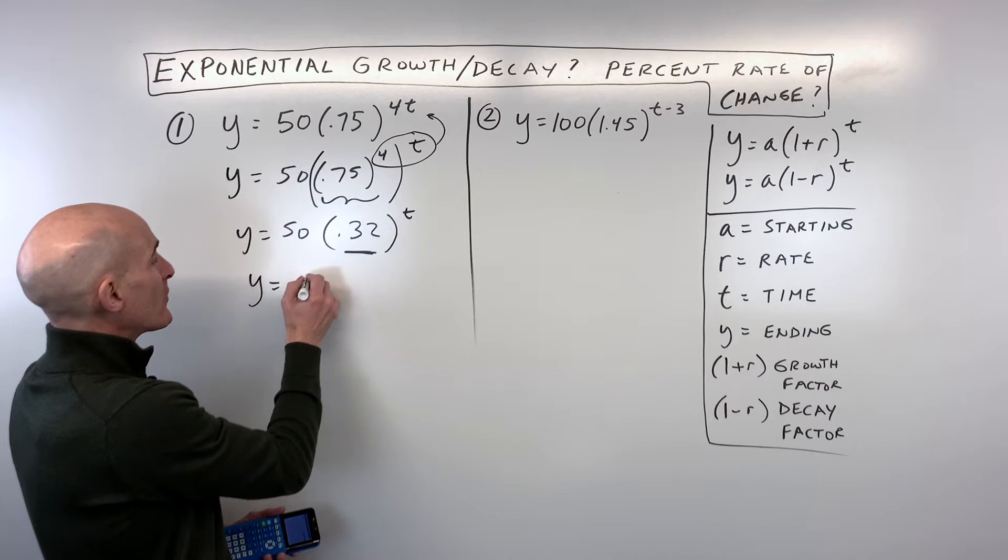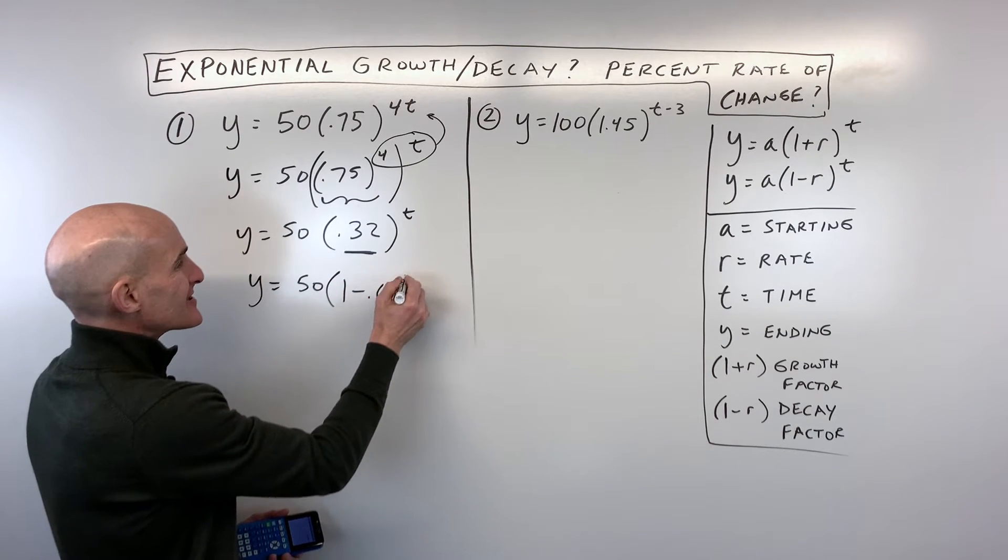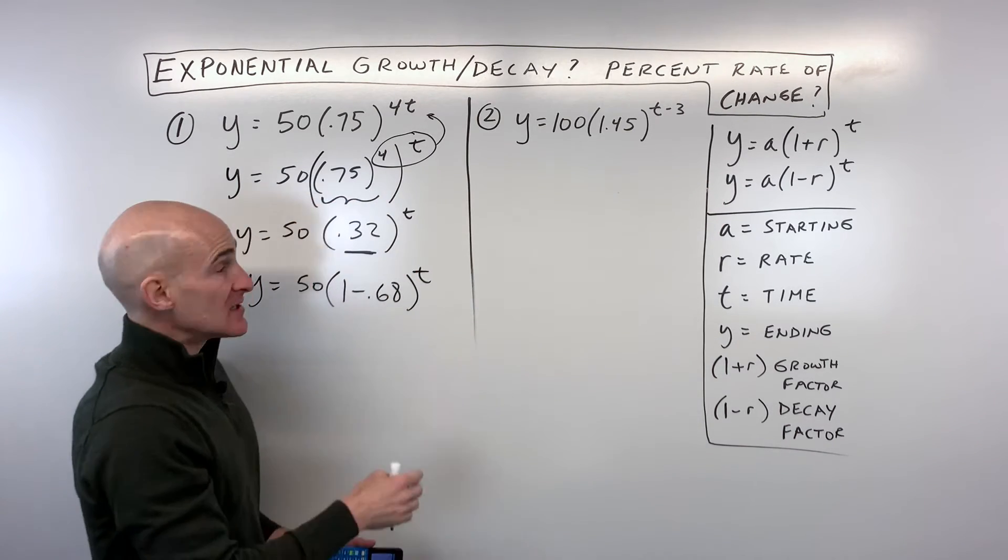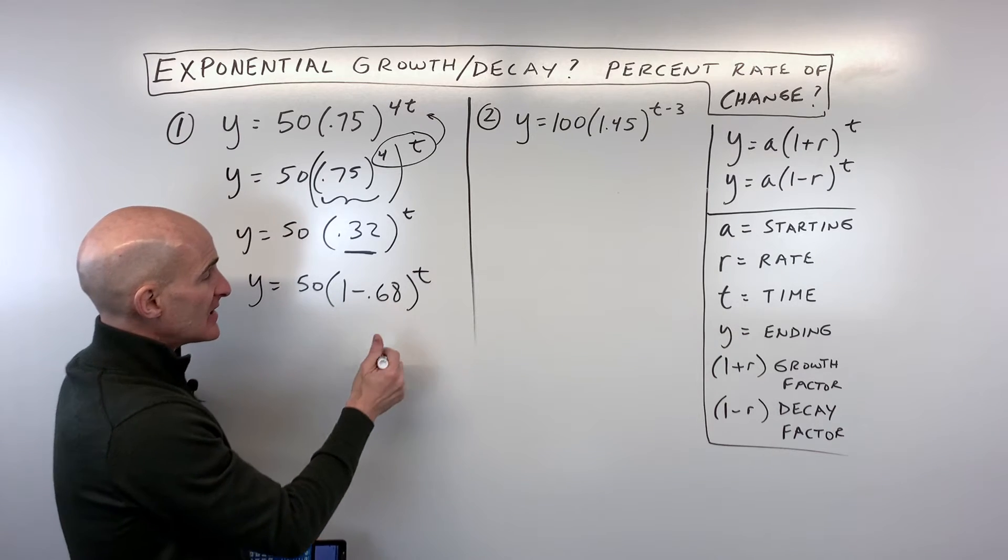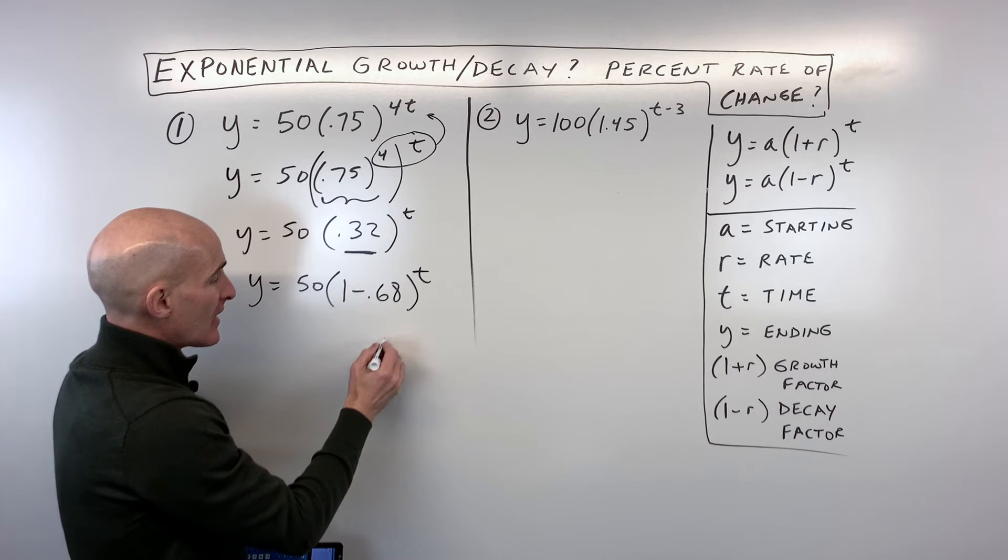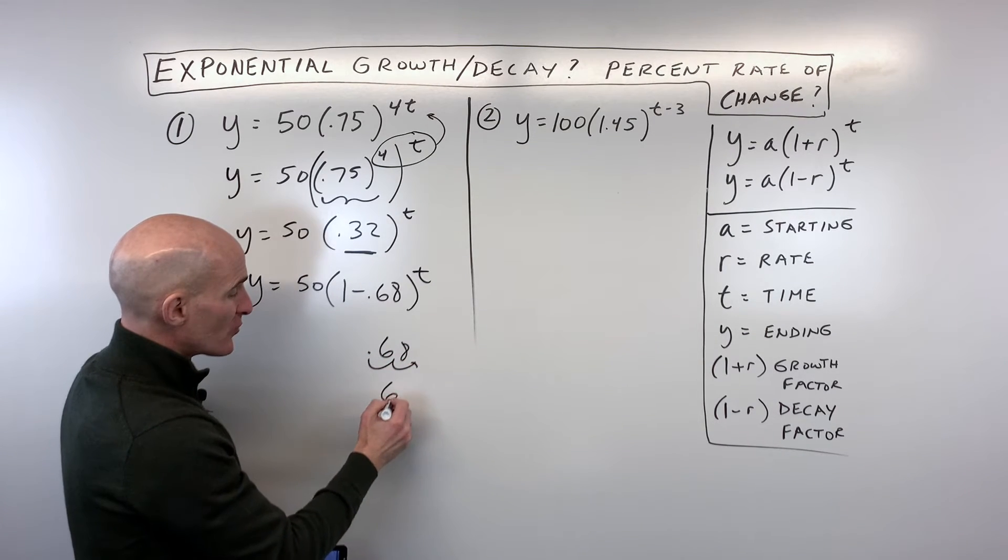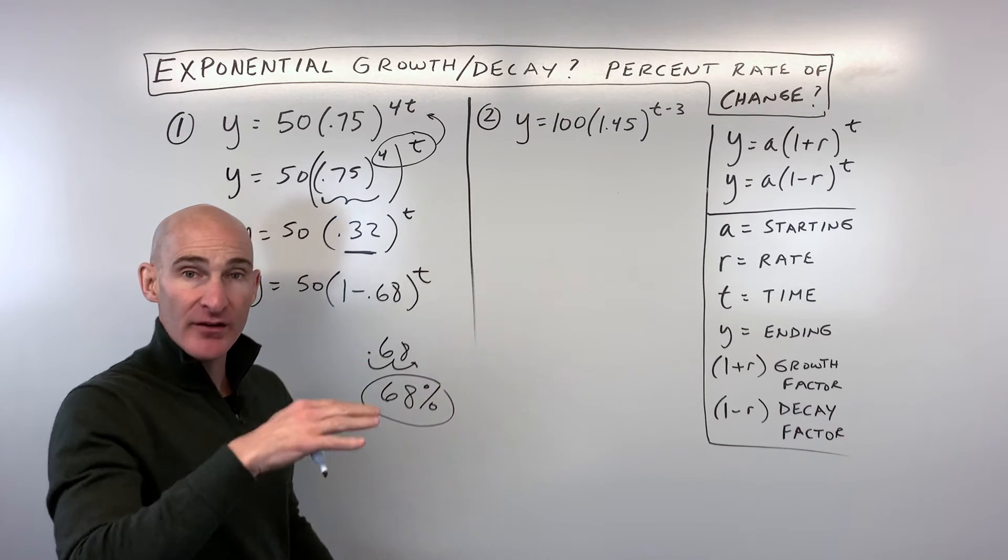Well you could rewrite this further by saying 0.32 is 1 minus 0.68, and so now it matches this form right here, we can see that 50 is our initial amount, and 0.68 is going to be our rate of decay, and I'm just going to take that 0.68 and move that decimal two places to the right to convert this to a percentage, and you can see that it's a 68% rate of decay.